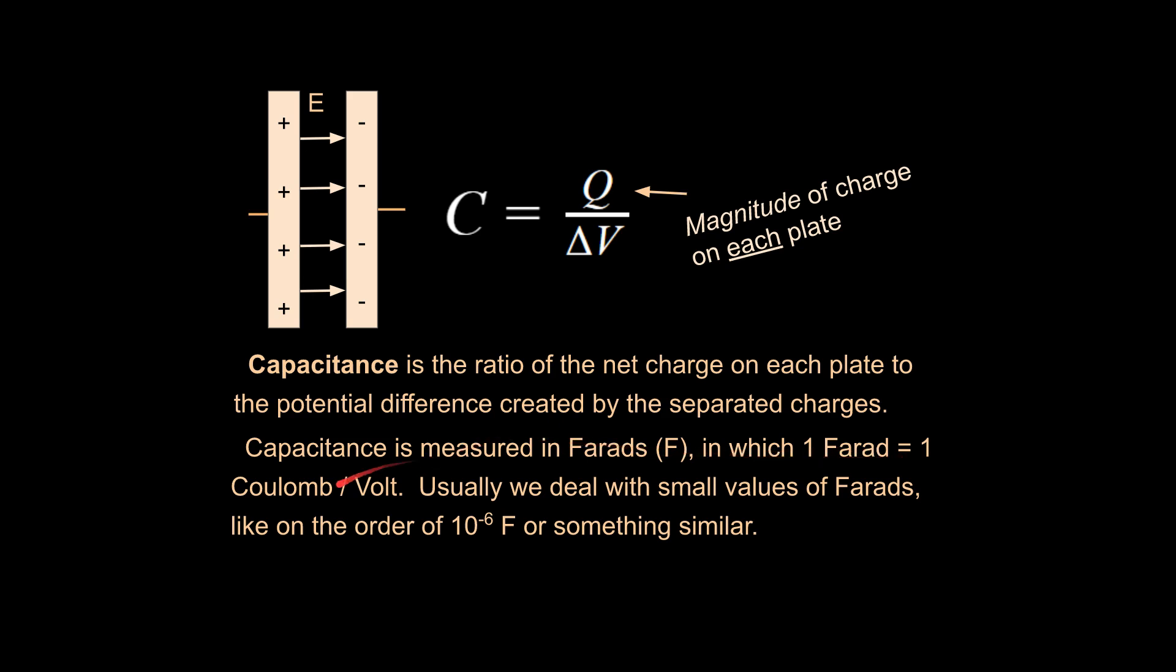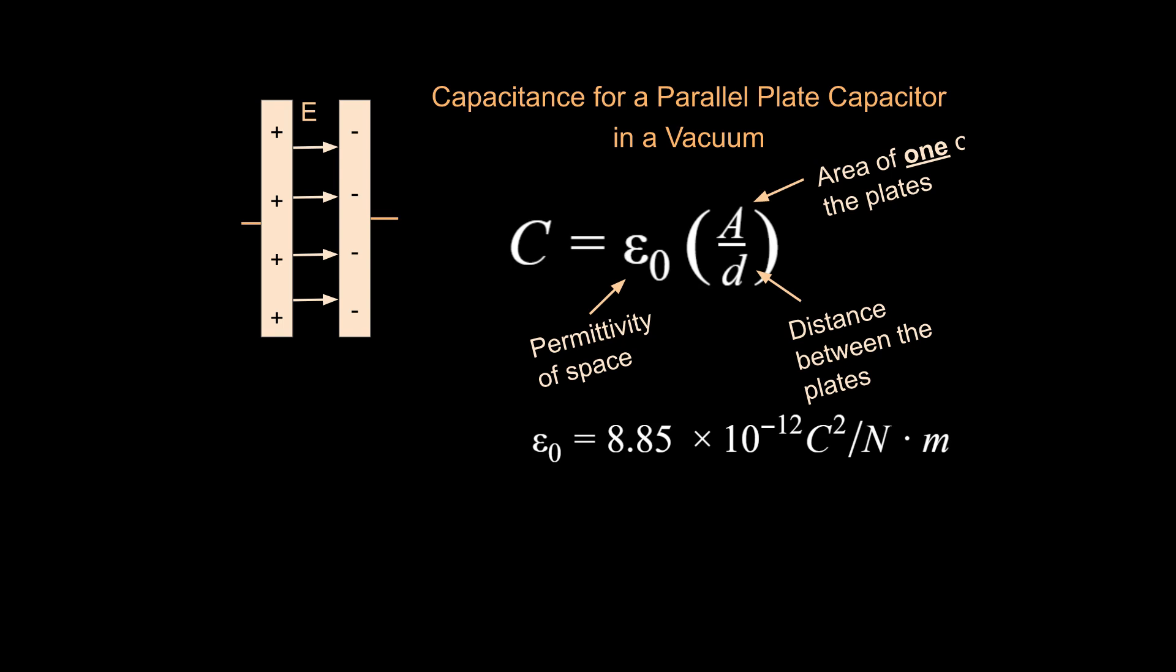So one farad is equivalent to one coulomb per volt. That would be a lot of capacitance. So typically we don't deal with numbers that are that high. We deal with farads in problems that are on the order of like microfarads or something like that. 10 to the negative 6, or even smaller, maybe nano 10 to the negative 9, or pico 10 to the negative 12. In any case, that's the equation that we can use to calculate basic calculations with capacitance. And sometimes basic equations can be really helpful to understand what is happening with the concept.